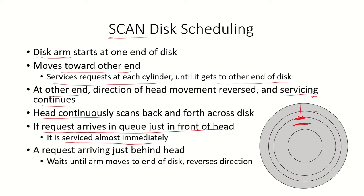If there is a request which is arriving just behind the head - let's say the head was here and now a request has come for a track which is behind the head - then this request will have to wait until the arm moves to the end of the disk, reverses the direction, and then services this request.